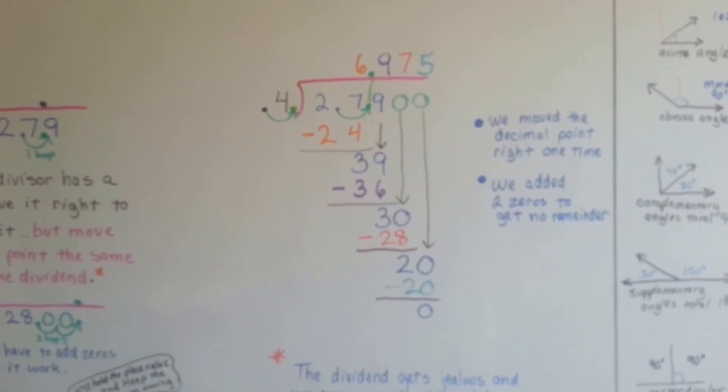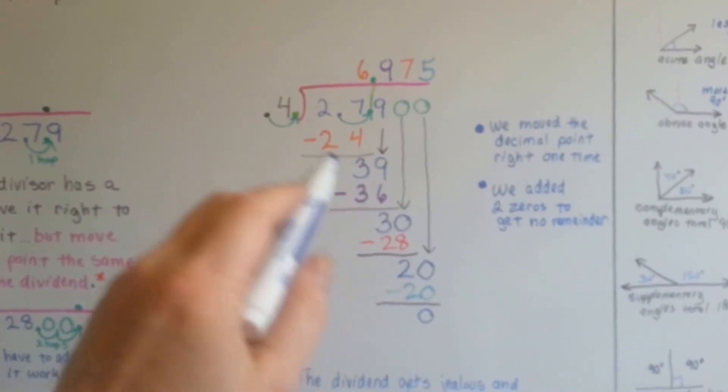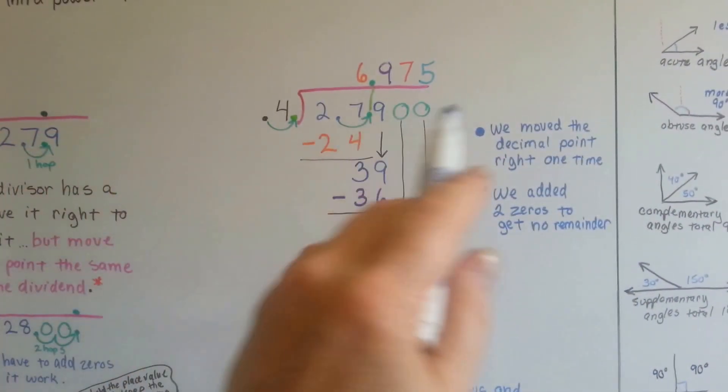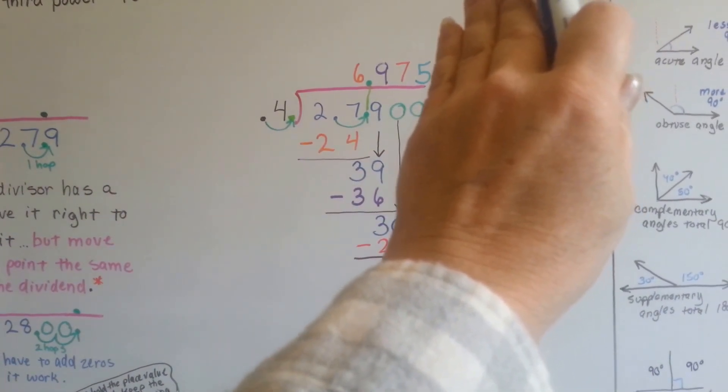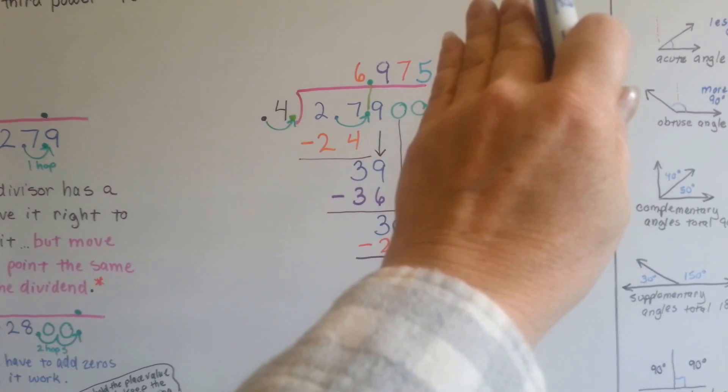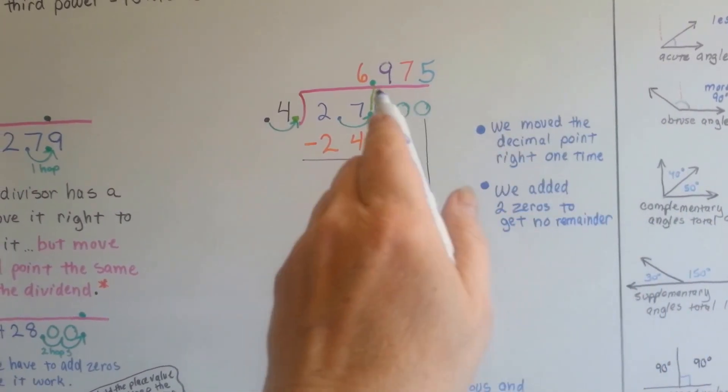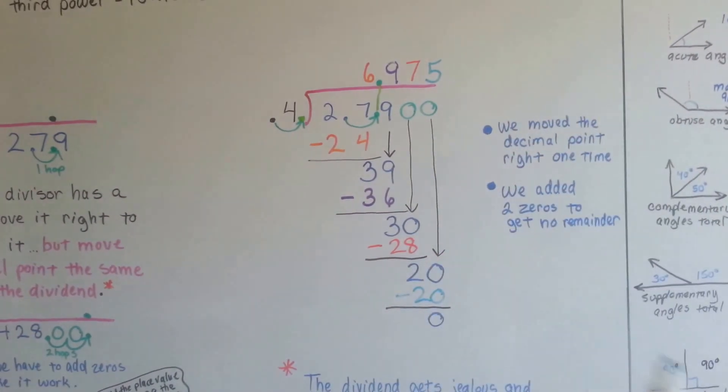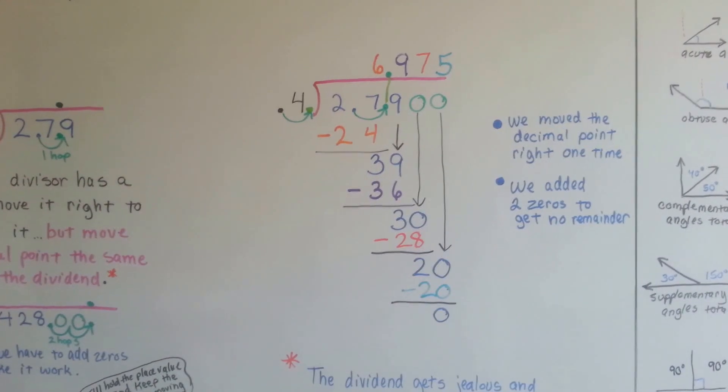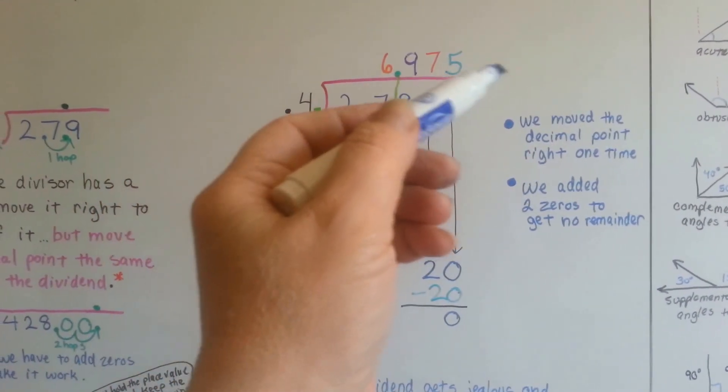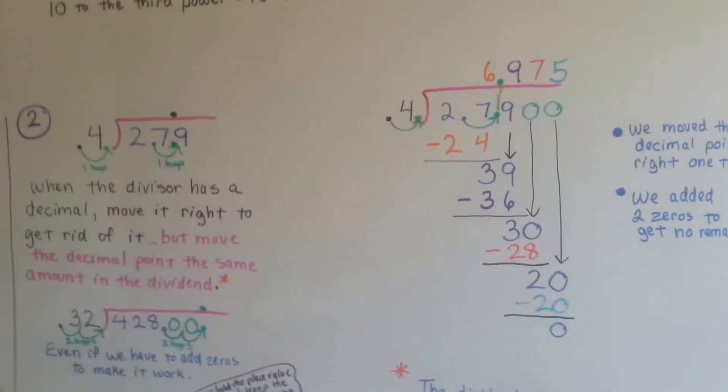If it keeps on going forever and ever and ever, teachers and businesses can generally say just stop after the second one and round up. So that 5 would tell the 7 to go up to an 8. We could just round it to 0.98 and be fine. So if it ends up going on forever and ever and ever, you can just stop and round up the third digit usually, okay? But when you're learning, your homework might continue on that way, so you might want to go a few just to see what happens, okay? That's how we divide decimals, and those are a couple rules for the decimal point that'll help you out when you're dividing them.